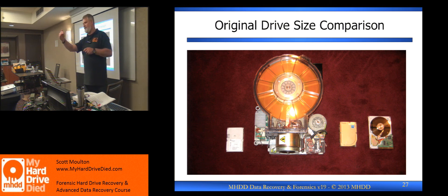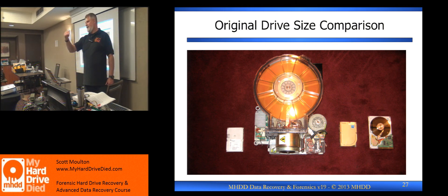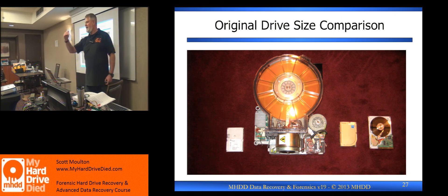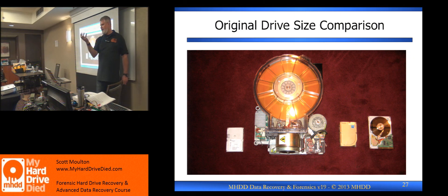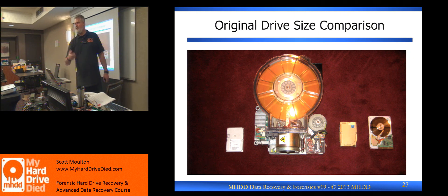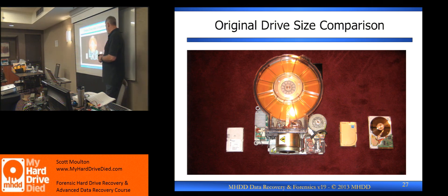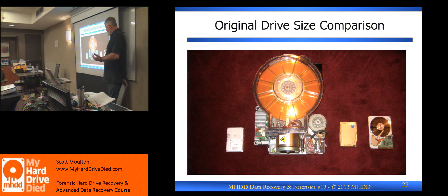Alan Shugart is the guy who created the floppy drive for IBM — he was the head physicist on the team. He left IBM and then created a hard drive that's almost exactly the same, not just size-wise but physically how it functions and operates. He just replaced the floppy with a hard drive platter. Those were the first drives for PCs, and that's what you now know as Seagate. Alan Shugart is the guy who started Seagate.